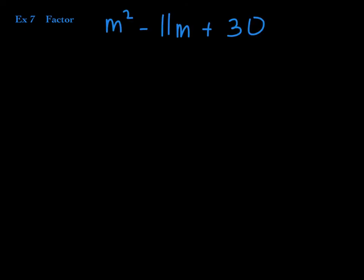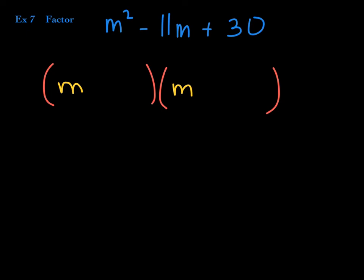Now we're shifting to factoring a trinomial. But first, what's the GCF? GCF is always first. Does everybody have an M? No. Do negative 11 and 30 share a common factor other than 1? No. So the GCF is just 1. If this trinomial factors — not all polynomials will factor — it must factor like this: whatever we put in the two blanks must multiply to give M squared, meaning both must be M, since M times M is M squared.